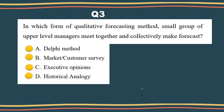The executive opinion, or jury of executive opinion, is developed around a business method forecast. Under this method, the opinion of a group of high-level experts or managers, often in combination with statistical models, are pooled to arrive at a group estimate for the future event. So what if the forecast scenario creates a look-up manager based on a proper assessment?